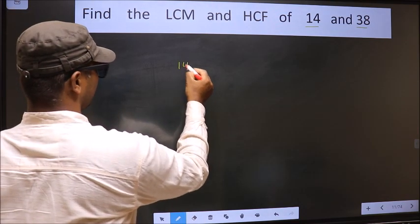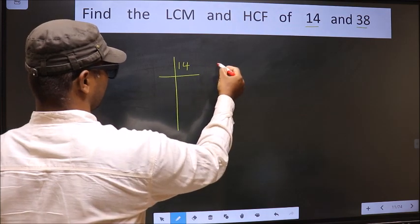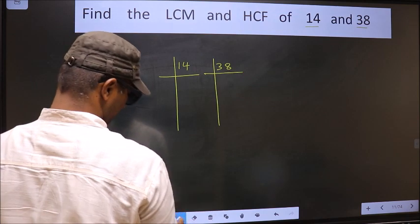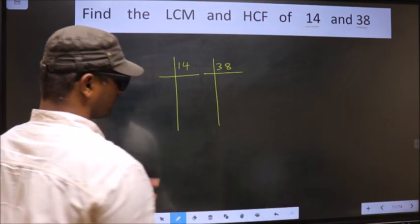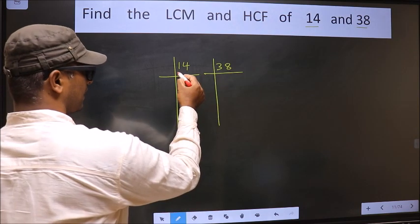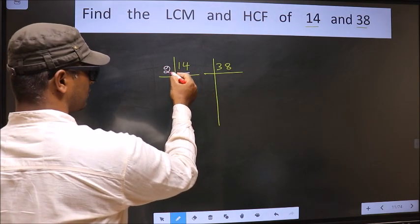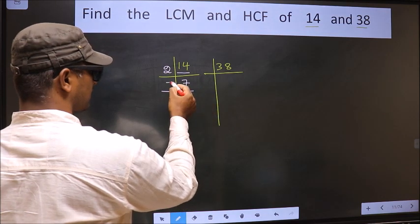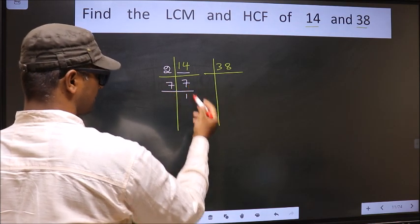14, 38. Next, here we have 14. 14 is 2 times 7. Now we have 7. 7 is a prime number, so 7 times 1 is 7.